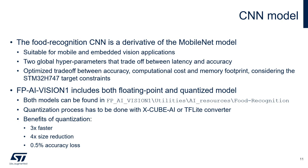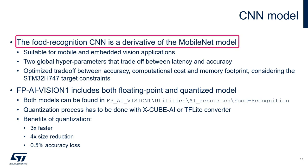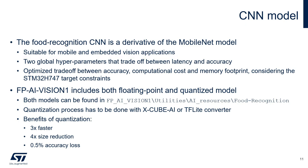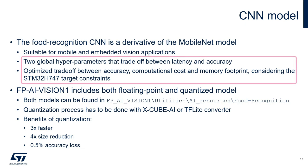I hope you enjoyed the demo. The neural network model used in this demo is a derivative of the MobileNet model, suitable for mobile and embedded vision applications, specifically for image classification problems. We tuned the two hyper-parameters to optimize the performance considering the constraints of the target hardware.